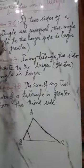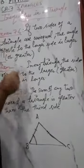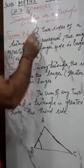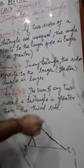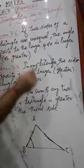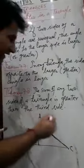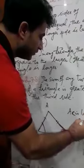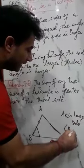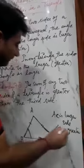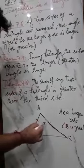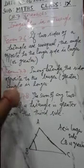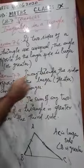These are the two theorems, 7.6 and 7.7. They are converse to each other. Theorem 7.6: if two sides of a triangle are unequal, the angle opposite to the longer side is greater. AC is the longer side, so angle B is greater because angle B is opposite to the longer side. Theorem 7.7: in any triangle, the side opposite to the larger angle is longer.